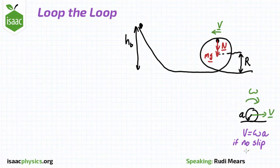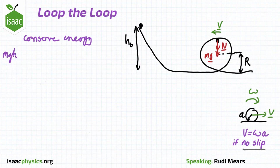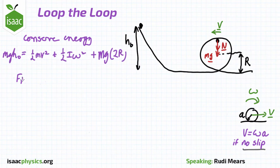As in the previous two parts, we want to use the no-slip condition that v is equal to omega a, and conserve energy. The only thing that's different is the calculation for the moment of inertia.